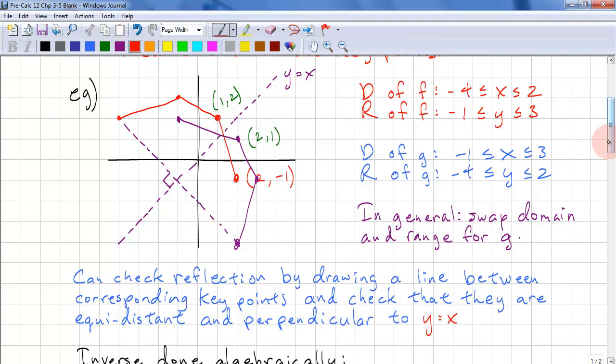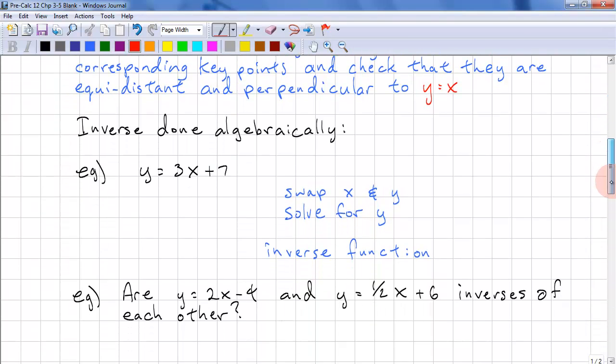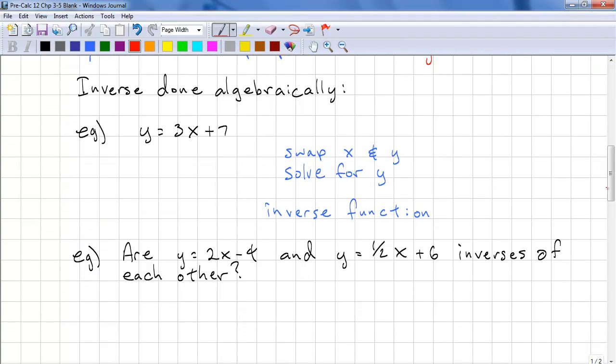We can do the inverse algebraically as well. So here we have a line, y is equal to 3x plus 7. We swap the x and y's first. Then we solve for y. And last step. So this is called the inverse function. And it's a function because this is a line.